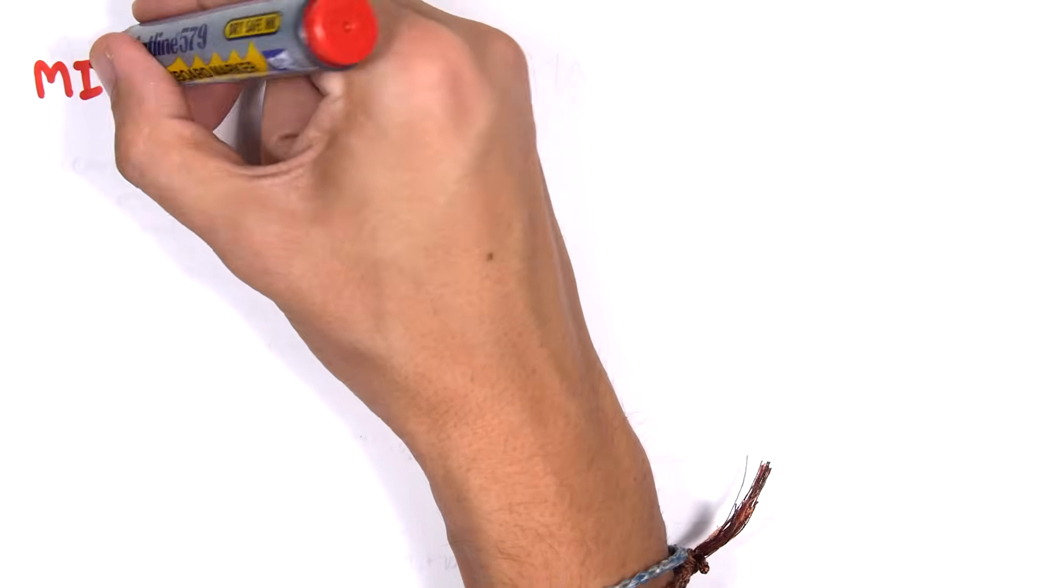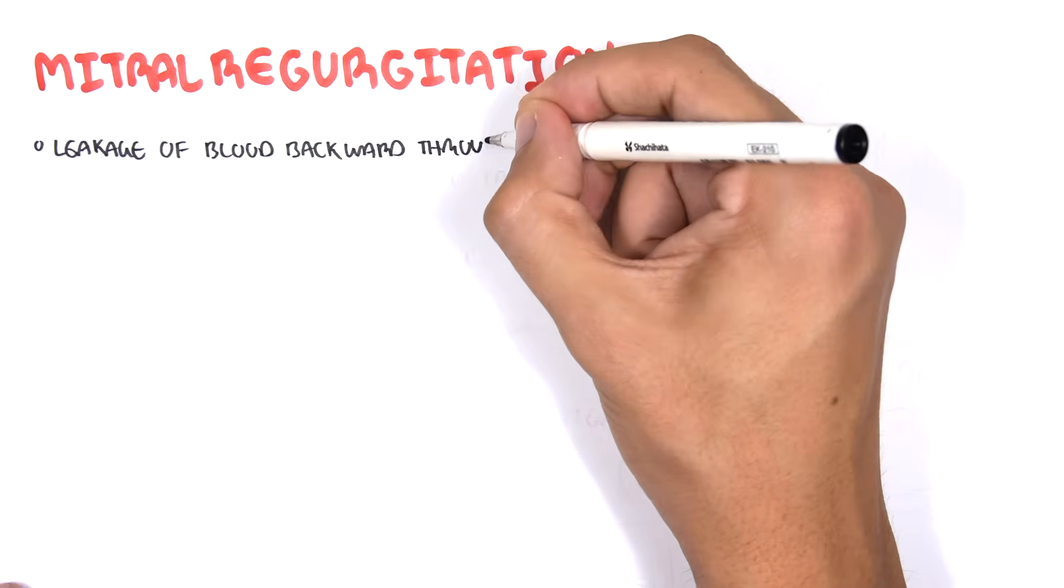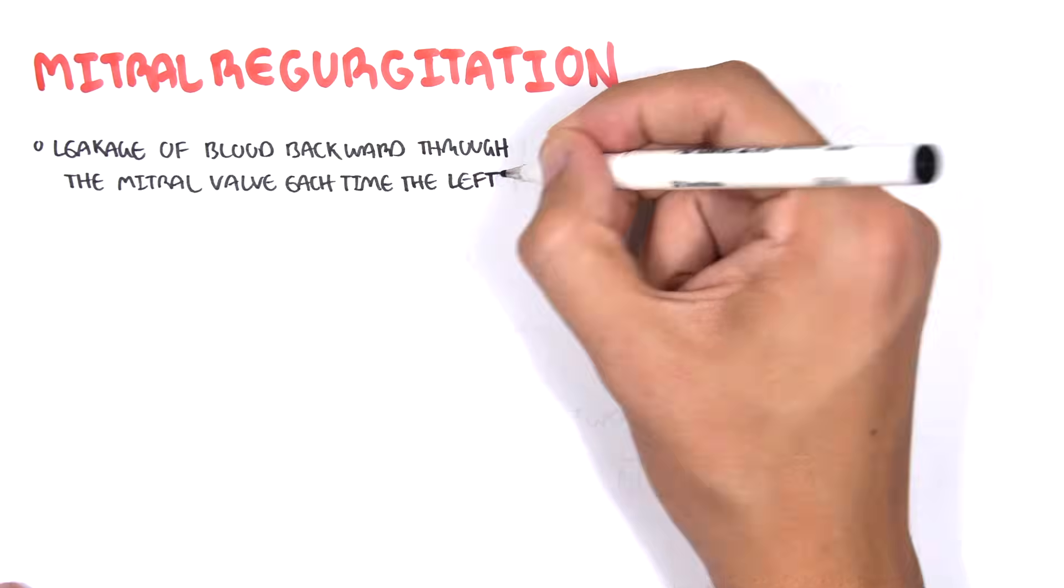In this video we're going to look at mitral regurgitation. This is an overview, an introduction. Mitral regurgitation is where there is leakage of blood backward through the mitral valve each time the left ventricle contracts.